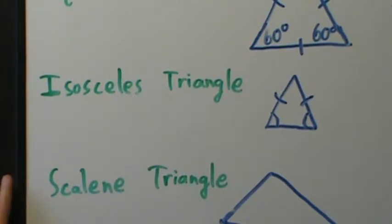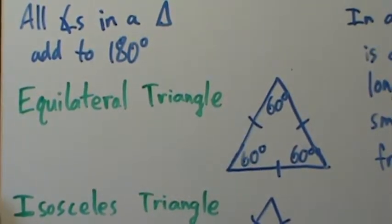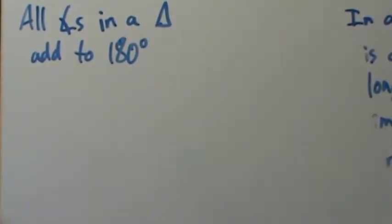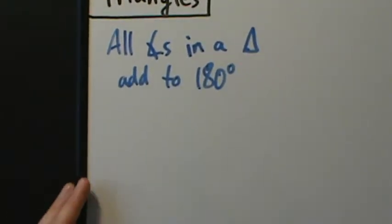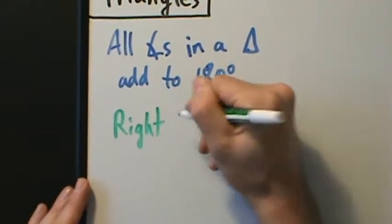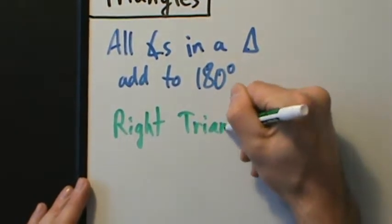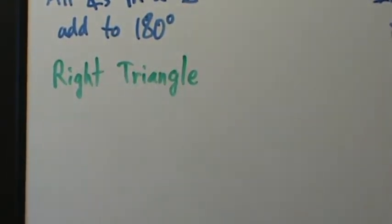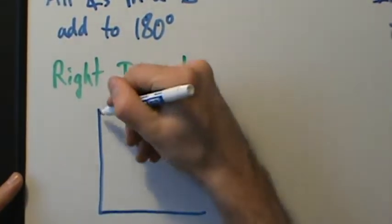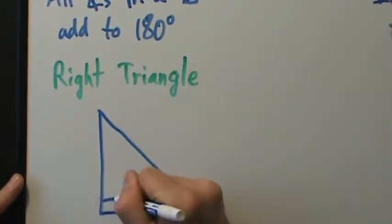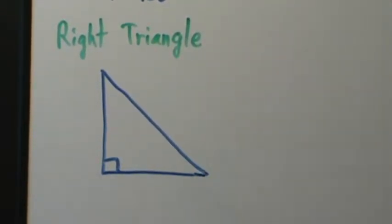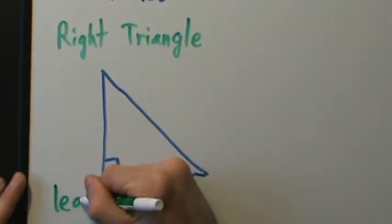Another very important type of triangle we'll talk a lot about in trig is the right triangle. A right triangle has a right angle — 90 degrees — which we denote with a small box. The two shorter sides are called the legs, and the longest side — across from the right angle — is called the hypotenuse.